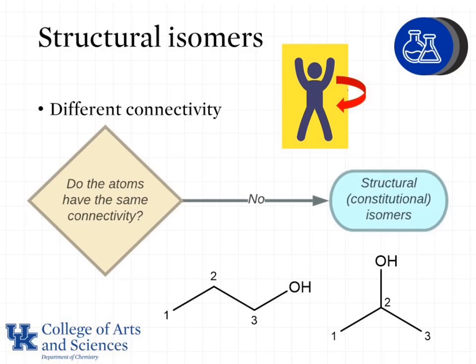Next we'll look at structural isomers, which are also called constitutional isomers. The question we ask is: do the atoms have the same connectivity? Imagine if I detached my arm and attached it to my hip — my body is no longer in the same sequence of parts. The same is true for our molecules. Looking at the molecules on screen, we have three carbon atoms. In the molecule on the left the OH group is attached to carbon number three, and in the molecule on the right the OH group is attached to carbon number two — a different connectivity between atoms.